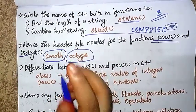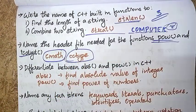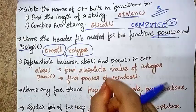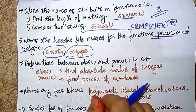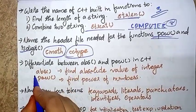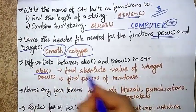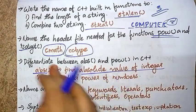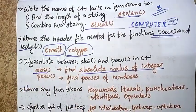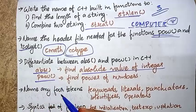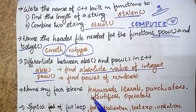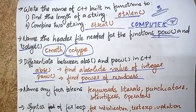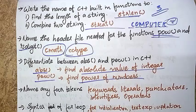Differentiate between abs function and power in C++. The abs function returns the absolute value of an integer. If we want to compute the power of a number, we use the power function.